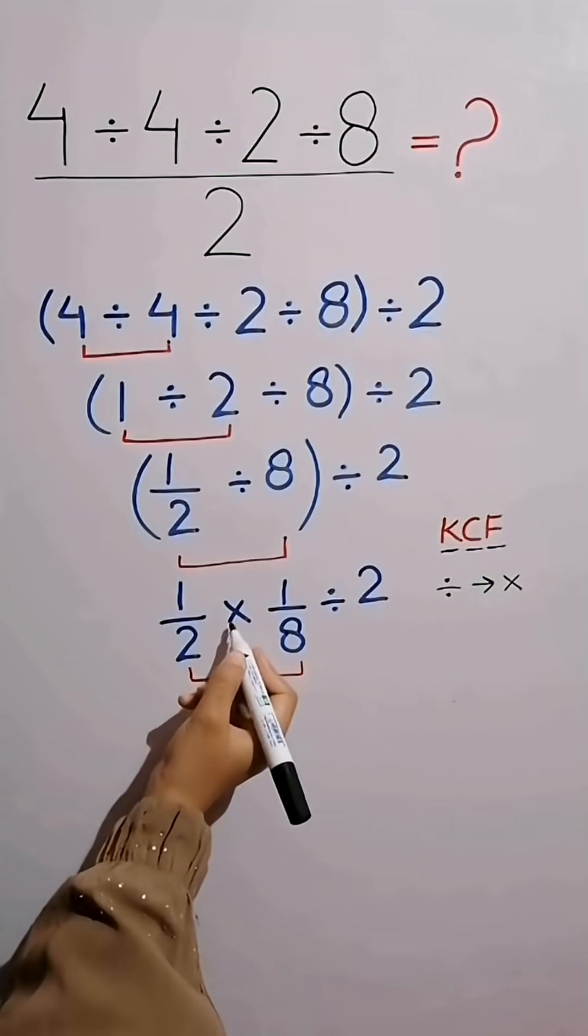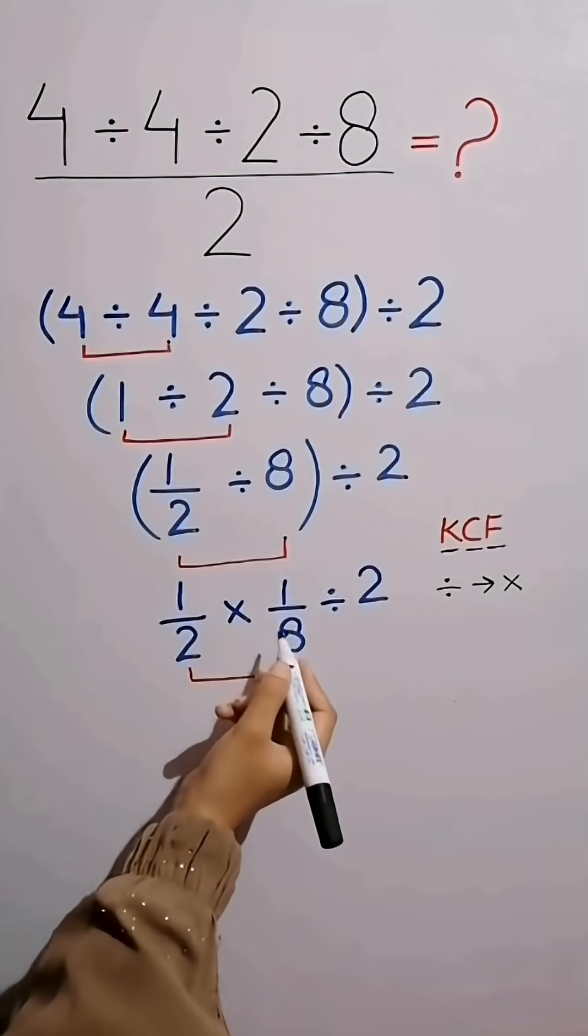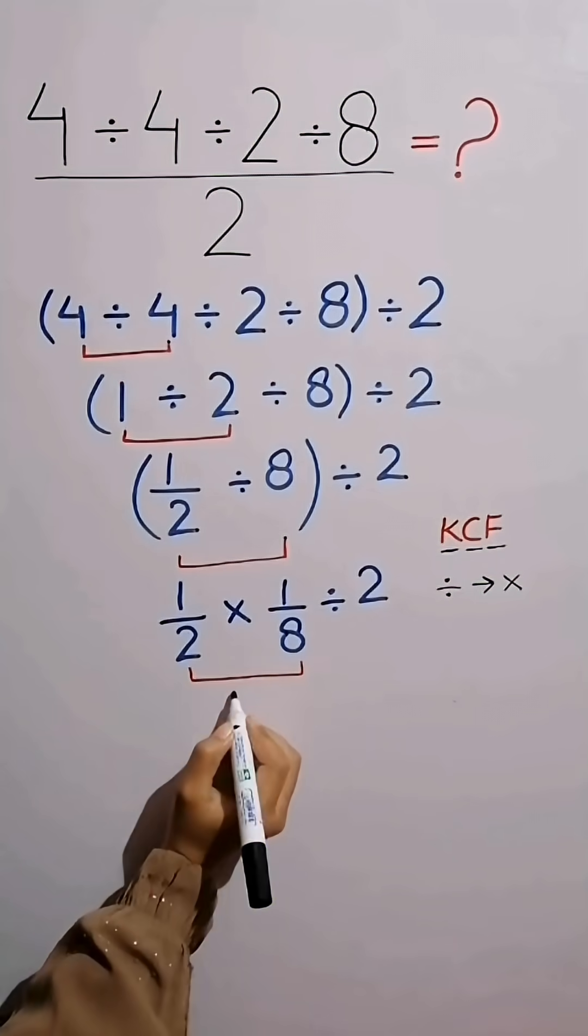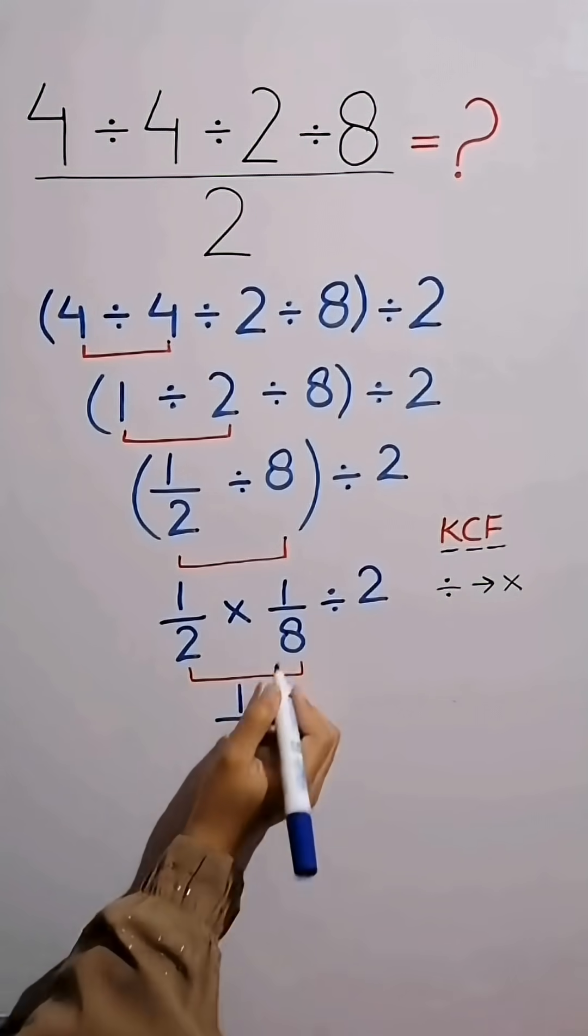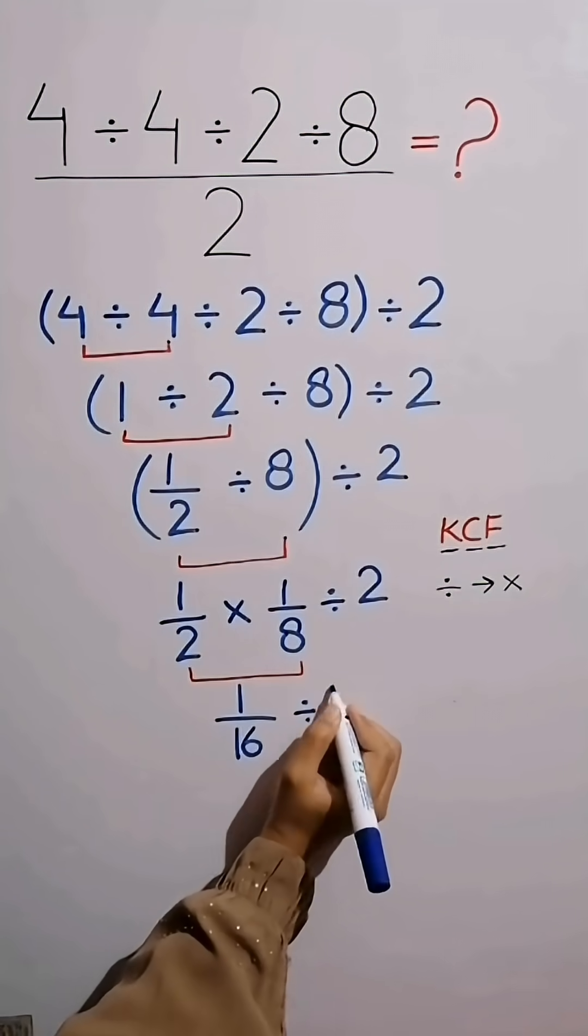Now multiply numerator with numerator and denominator with denominator. 1 times 1 equals 1, 2 times 8 equals 16. Then divide it by 2.